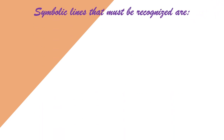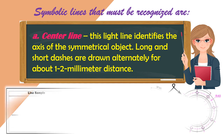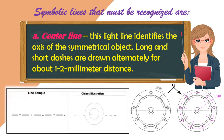The next symbolic line is the center line. The center line is a light line that identifies the axis of a symmetrical object. Long and one short dashes are drawn alternately at about one to two millimeter distances. In the illustration, the center line indicates the middle of an object.